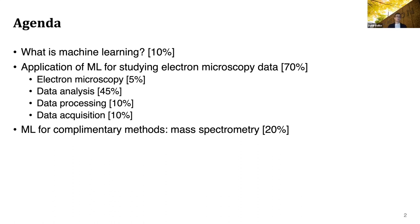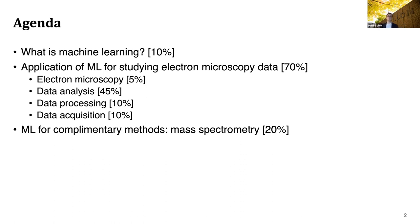So today, we'll start with what is machine learning, and we'll see different applications and a good framework for how we can think about machine learning systems. Then we will see how machine learning can be applied to study electron microscopy data. And finally, we'll see how machine learning can be used for complementary methods such as microscopy geometry.